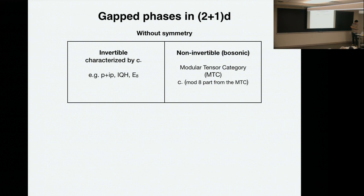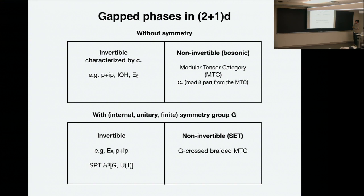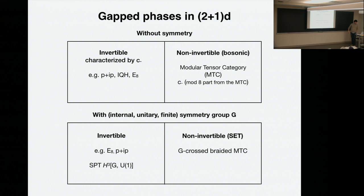In this space, I can talk about a tensor category. And in addition, there's a central charge. The modular part is determined from the category, but that number needs to be specified. Then the system has a symmetry group — let's just assume the symmetry group is an internal one, and unitary finite. Then in 2+1, we also have a good understanding. So the invertible ones, besides the phases characterized by a central charge and a paracentral charge, non-chiral ones can also have non-trivial phases — these are symmetry-protected phases. And in 2+1, they are all classified by the third cohomology of G.